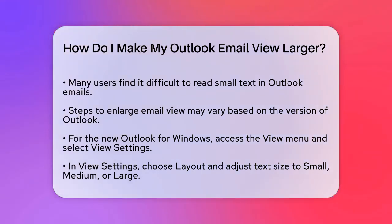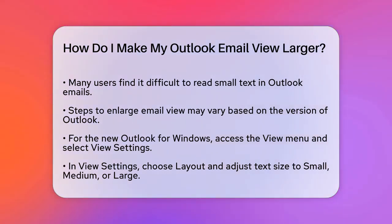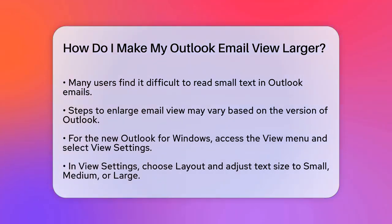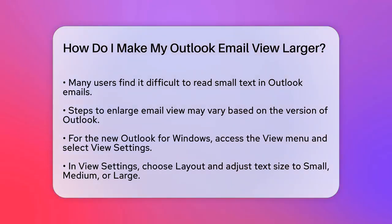First, let's talk about the different versions of Outlook because the steps can vary slightly. If you're using the new Outlook for Windows, open Outlook and go to the top menu, then select View. In the View menu, you'll see View Settings. Click on this and then select Layout. Under Text Size and Spacing, you can choose from Small, Medium, or Large text sizes. Once you've made your selection, click Save to apply the changes.